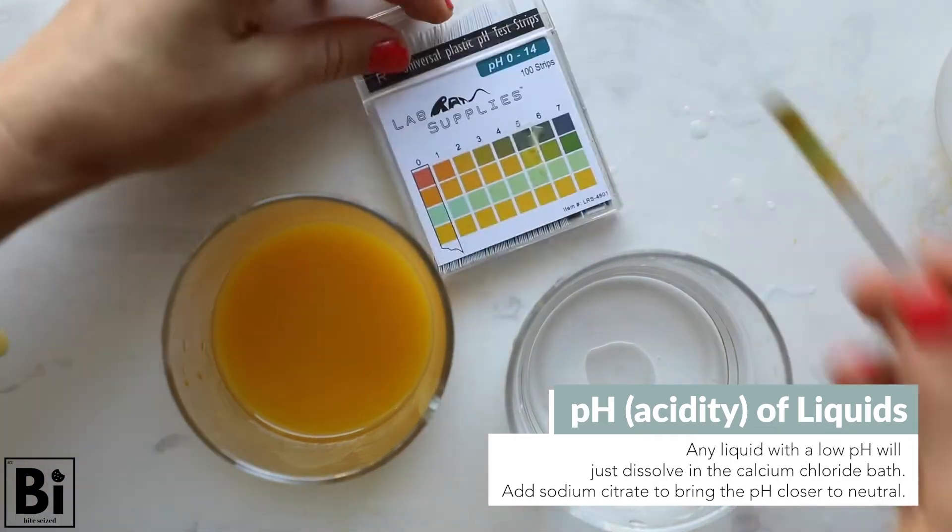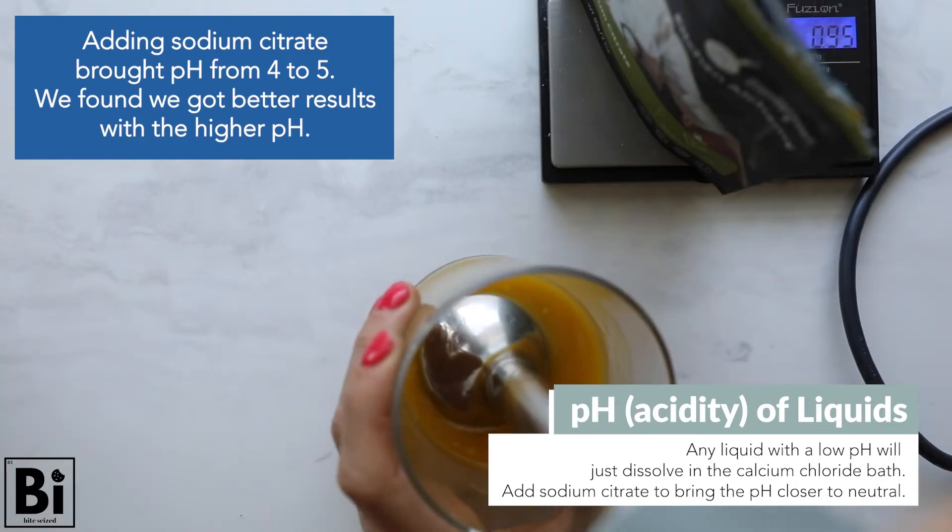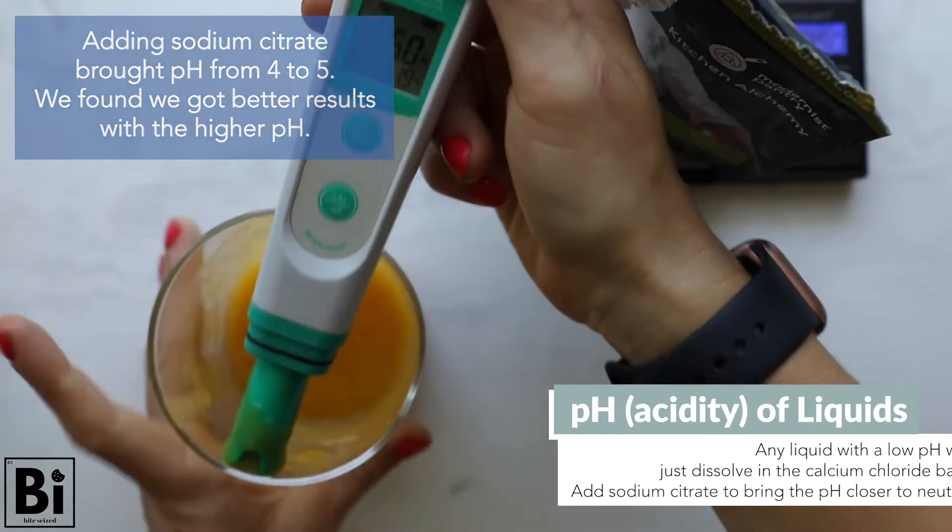Here's an example. We had mango juice, which originally had a pH of about 4, and by adding the sodium citrate, it had a pH of 5. Then we just followed the rest of the directions as normal.